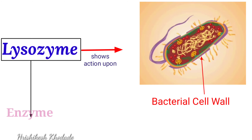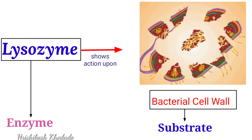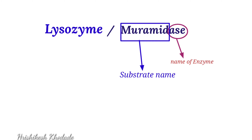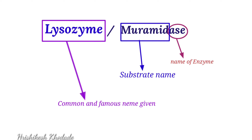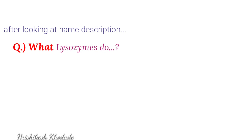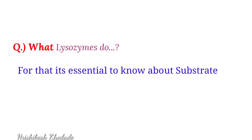These enzymes act especially upon bacterial cell walls, so for lysozymes, bacterial cell wall is the substrate. Lysozyme is also known as muramidase — the suffix 'ase' indicates it is an enzyme, and muramide refers to its substrate. Lysozyme is the common and famous name given to this enzyme. It is important to know about the substrate.